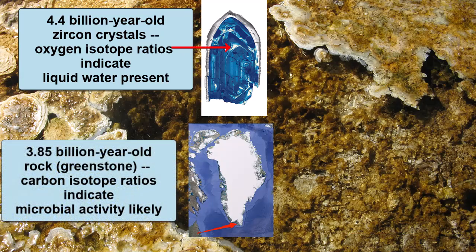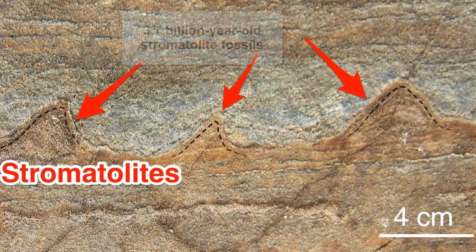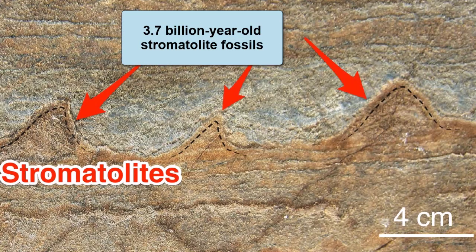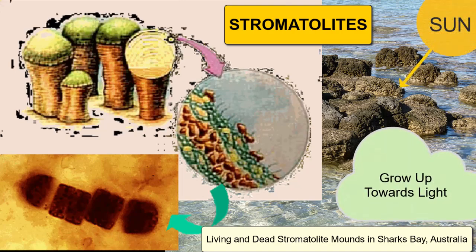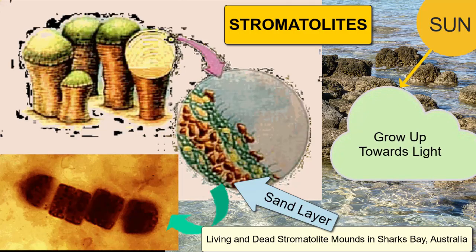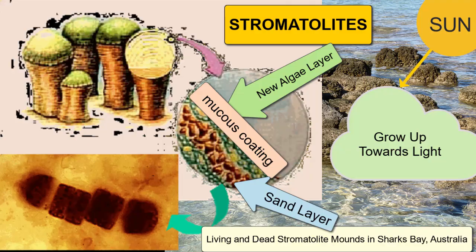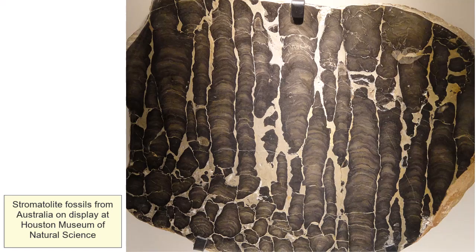A 3.85 billion year old rock from Greenland was found to have carbon isotope ratios suggestive of microbial activity. However, the first fossil evidence we have are stromatolite mounds found in 3.7 billion year old rocks from Greenland. Stromatolite mounds form by successive layers of photosynthesizing cyanobacterial mats growing in a coastal environment and doming upwards towards the light. Each layer traps sand within it, ultimately blocking the light and requiring new layers to form atop the old ones. The cyanobacteria are protected from ultraviolet rays by the thick mucus coating in which they live.